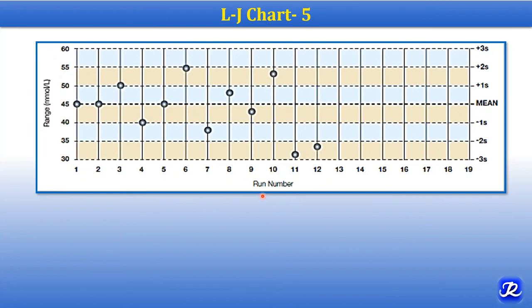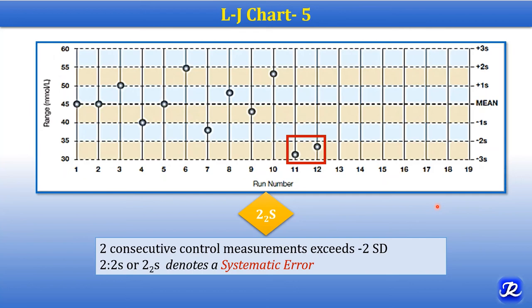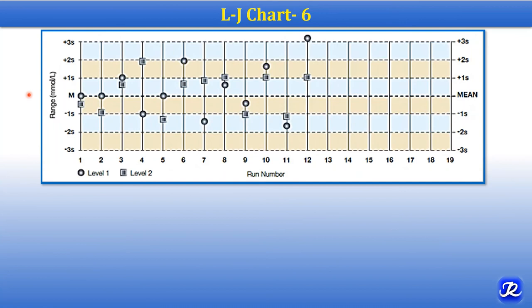In this LJ chart, the 11th and 12th runs both have values above minus 2 standard deviations. When two values exceed 2 standard deviations, this is the 2-2S rule — two consecutive control measurements exceeding minus 2 standard deviations in this case. It denotes a systematic error.